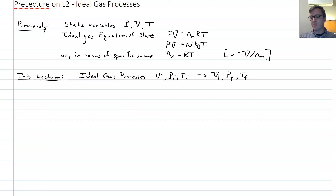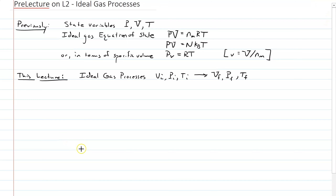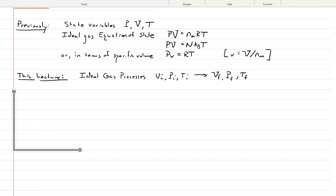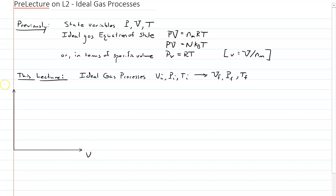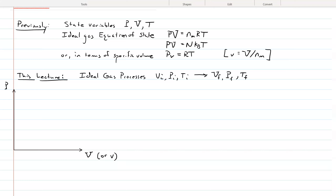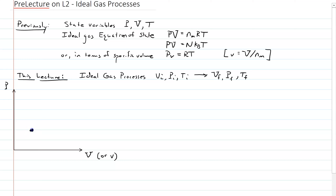We want to start thinking about how to represent this graphically. I think diagrams are very helpful for understanding. So I'm going to represent thermodynamic states of an ideal gas in what we call a PV diagram — we put V on the x-axis and P on the y-axis. Every equilibrium state is represented as a point on this diagram.